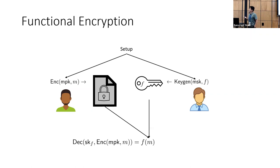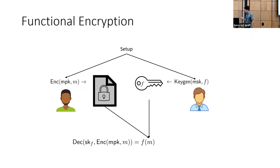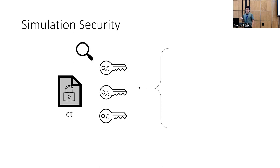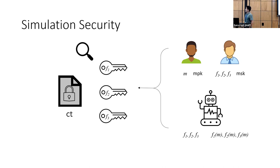For a functional encryption scheme to be secure, the function output should be all you learn when you decrypt. To capture this more formally, there is a simulation security game where an adversary gets to request a ciphertext and a bunch of function keys. They shouldn't be able to tell if these were produced honestly using the encrypt and keygen algorithms, or by a simulator which doesn't know the message itself but only knows the evaluation of the message on those functions, and has to simulate the keys and ciphertext.